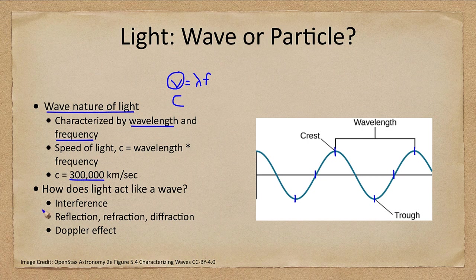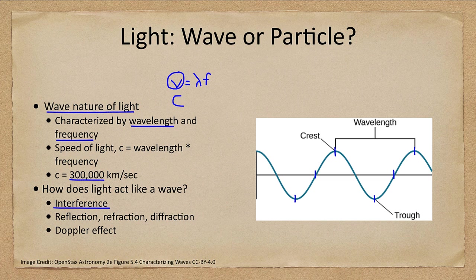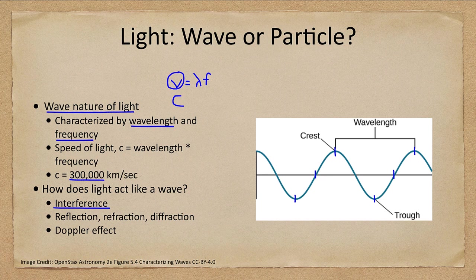What are some of the properties where light acts like a wave? Light undergoes interference. So we see interference patterns in light, much as we see in a wave pool, where waves can combine together to give you very large waves, or cancel to give you no wave.